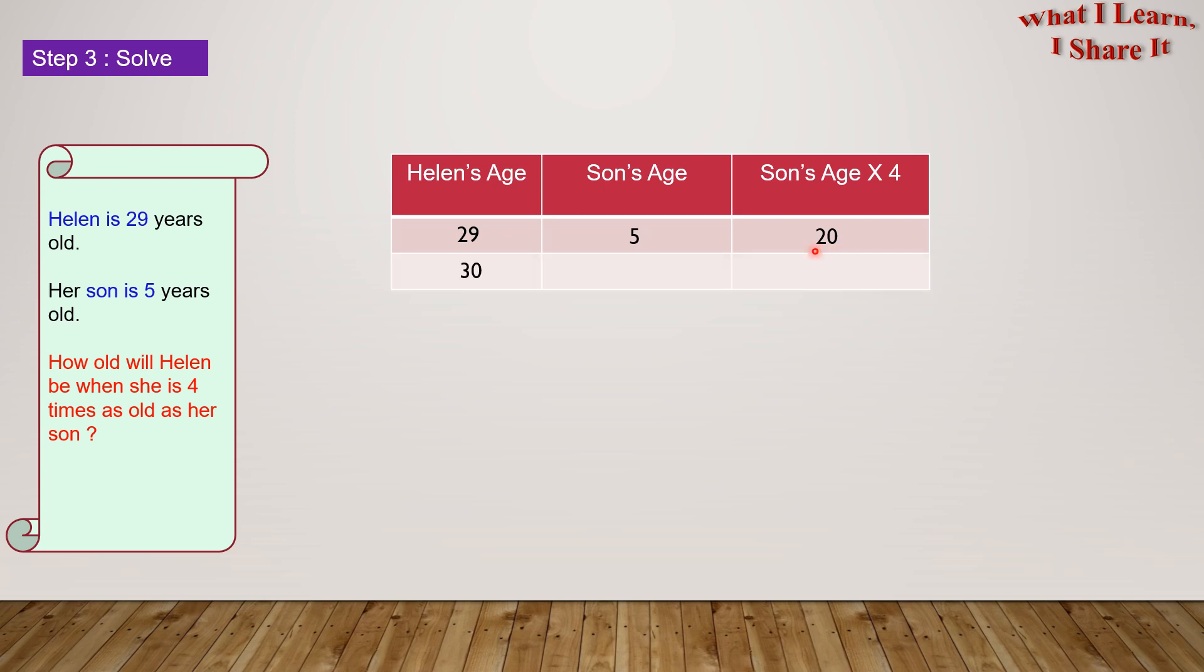Next year, Helen would be 30 years old, and her son would be 6 years old. So her son's age, times four, equals 6 times 4, equals 24.